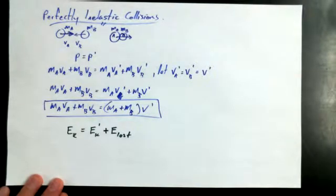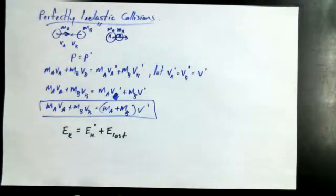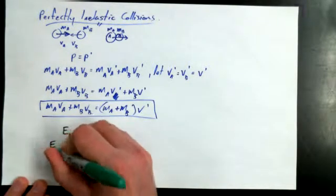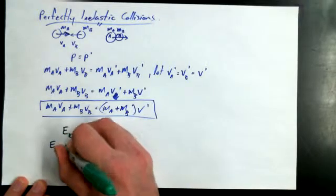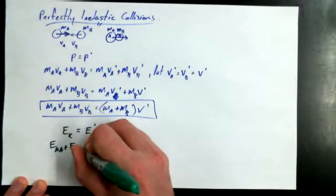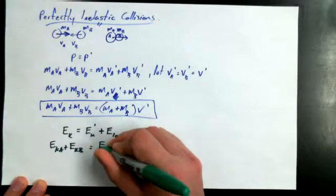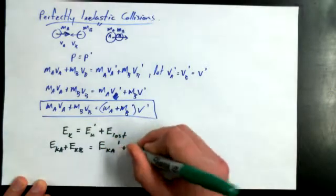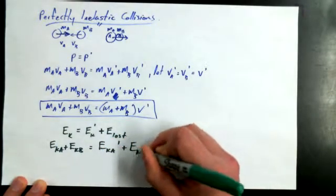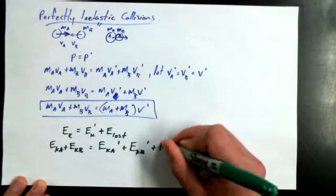I could take the energy lost over to the other side, and I could make the argument that the energy before minus the energy lost is equal to the total energy afterwards. It's the same thing, though. It's just a different way of thinking about it, maybe. But I think this kind of works. So I could plug it in like this. I could say EK before is really EKA plus EKB, which is EKA primed plus EKB primed plus energy lost.